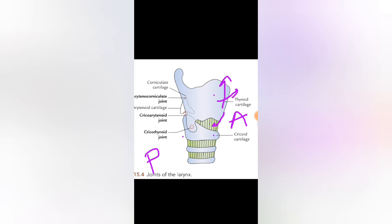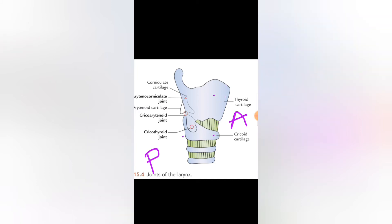The thyroid cartilage rotates forward along the transverse axis and returns to its normal position. When it goes forward, the vocal folds present on the posterior side are tensed, and when it returns to normal, the vocal cords relax. This is the concept of the transverse axis and rotatory movement for the cricothyroid joint.